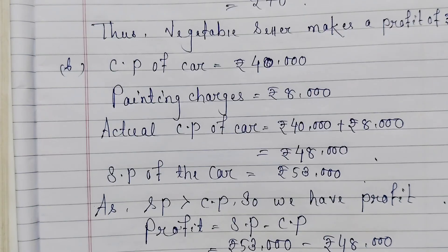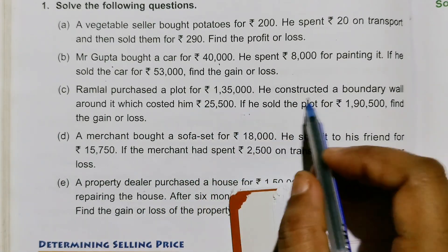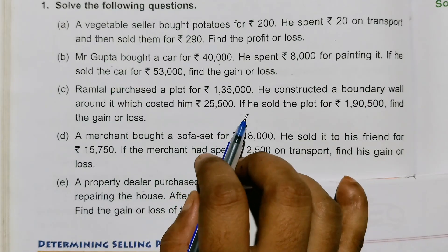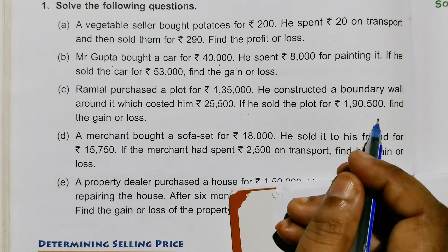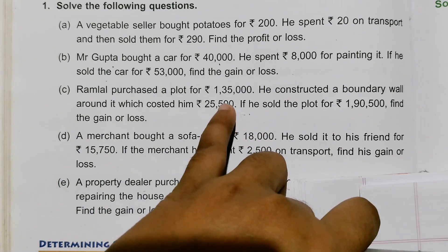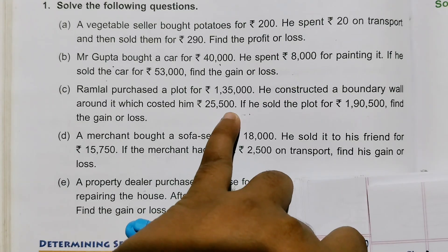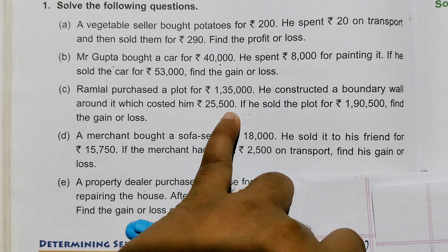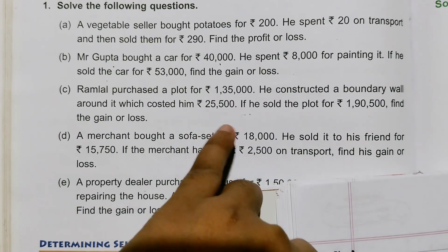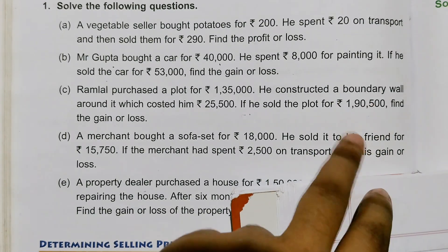Now we solve point C. Ramlal purchased a plot for 1,35,000 rupees. He constructed a boundary wall around it which cost him 25,500 rupees. If he sold the plot for 1,90,500 rupees, find the gain or loss. Cost price of plot is 1,35,000 and boundary wall charges are 25,500. Actual cost price is 1,60,500. Selling price is 1,90,500 rupees, so it is also profit.